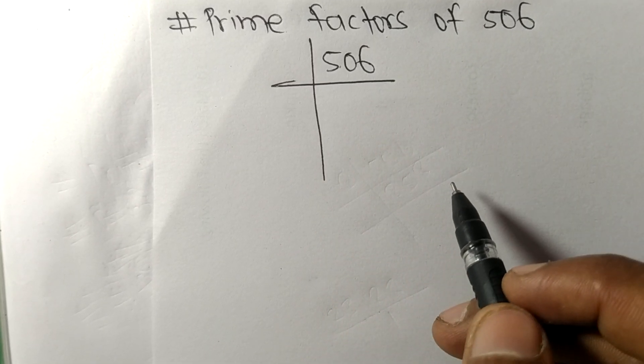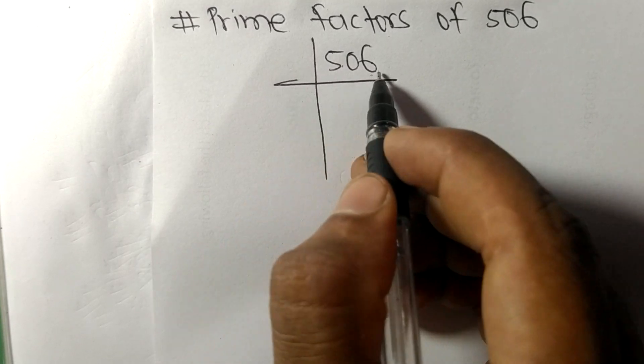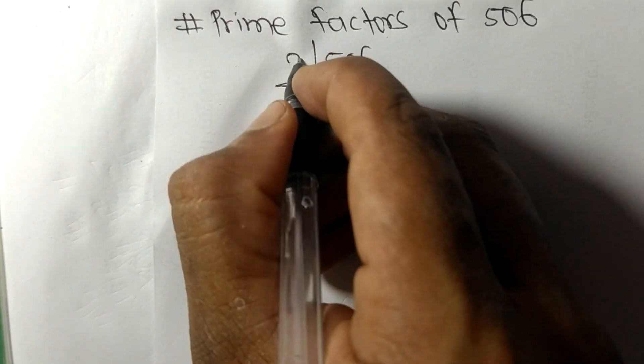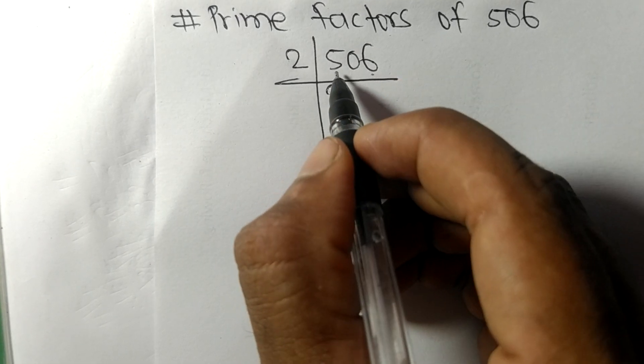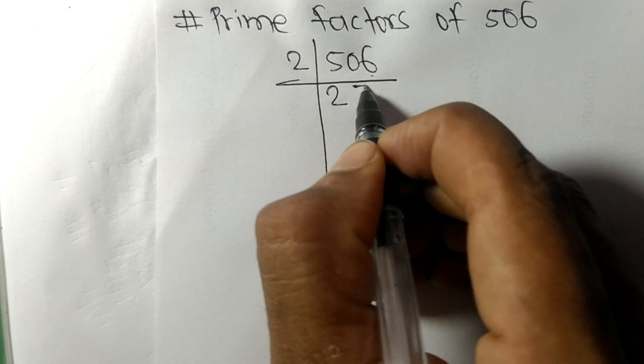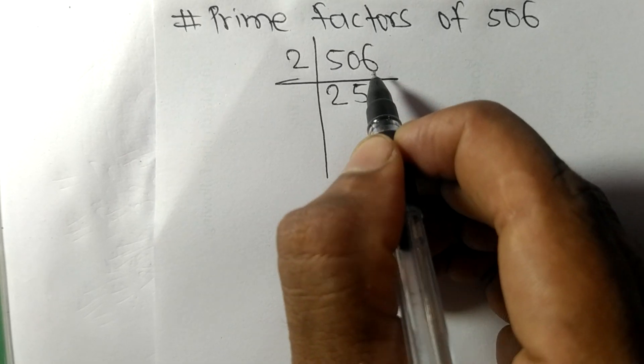So at last it contains an even number 6, so this whole number is divisible by 2. 2 times 2 is 4, remainder 1. 1 0 is 10. 2 times 5 is 10, and 2 times 3 is 6.